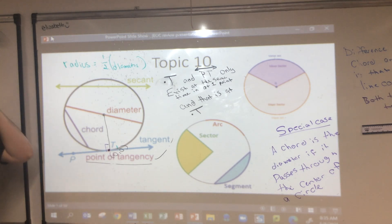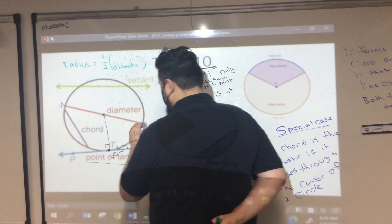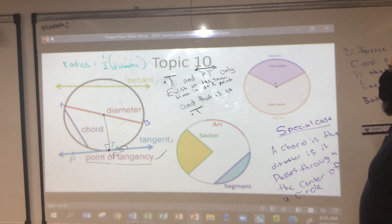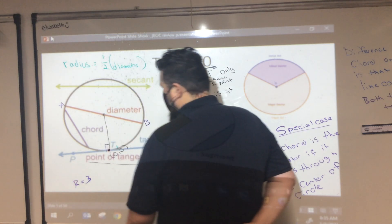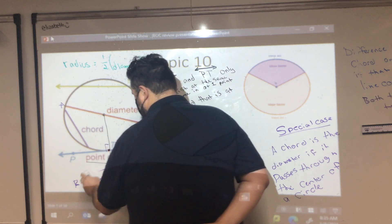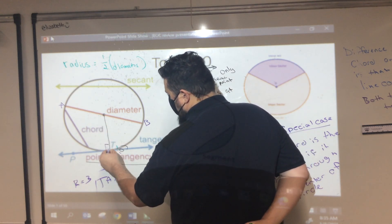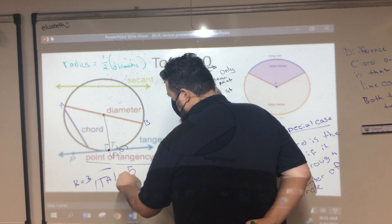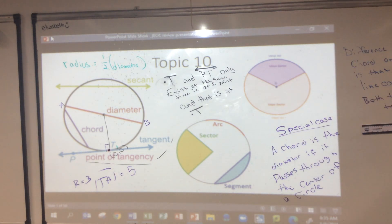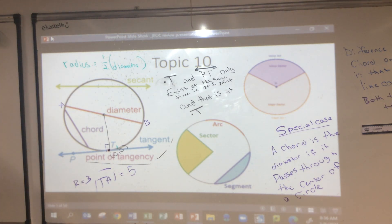Let's call this diameter chord AB. If I were to tell you the radius is 3, and we need the length of the diameter — Brie, if the radius is 3, what's the length of the diameter? It's 6.